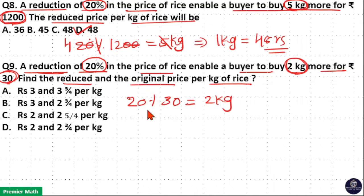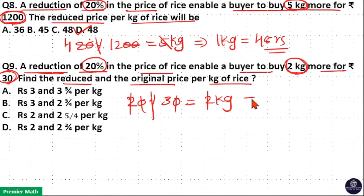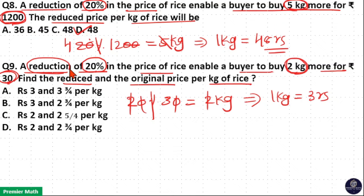Now, % and 00 cancel, and 2 and 2 cancel. That is, 1 kg cost is equal to Rs. 3. Now, you can see this is the reduced price — Rs. 3 is the reduced price.